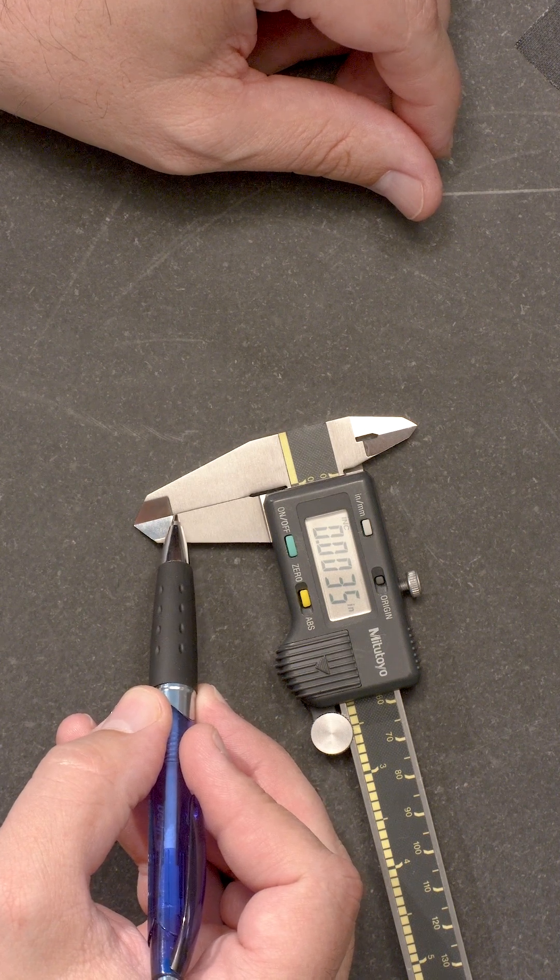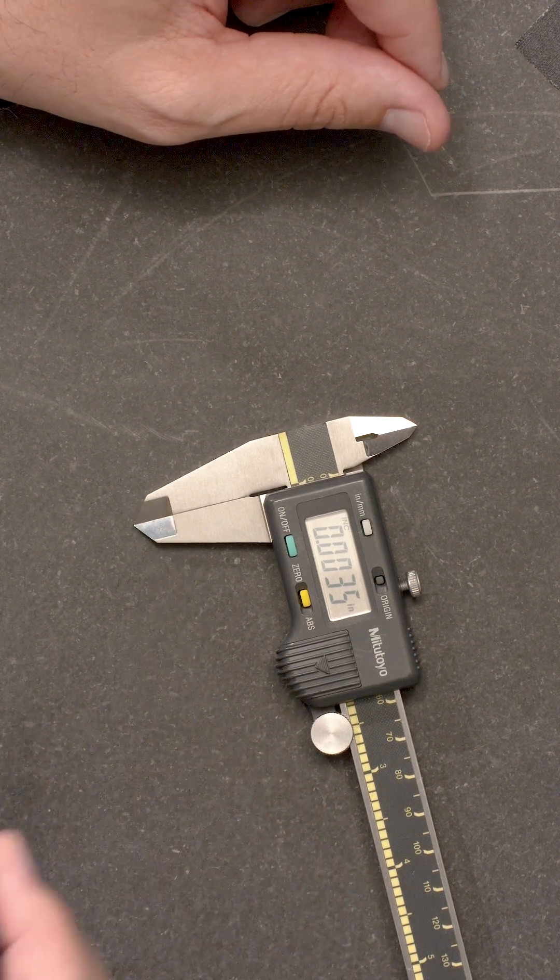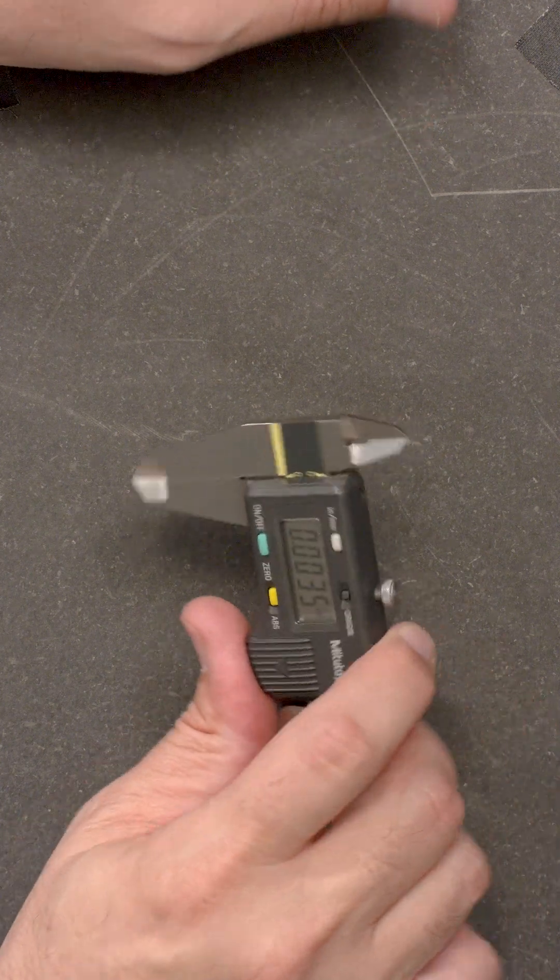If you see something, you can then do a more thorough and quantitative test by using a gauge pin.